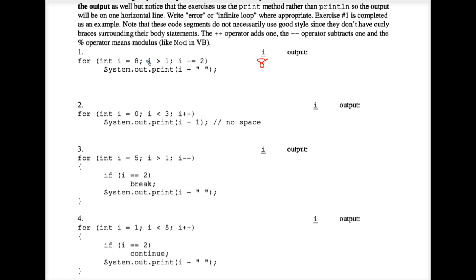Number 1, we check the control expression. 8 is greater than 1, so we system out print. Do not execute the incrementing expression first. So the output is 8 with a space.